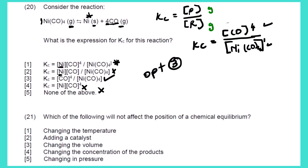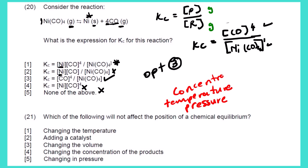Question 21: which of the following will NOT affect the position of a chemical equilibrium? You should know that the factors that affect chemical equilibrium are three: temperature, pressure, and concentration. Note that pressure can be varied using volume — when we increase volume we decrease pressure, and when we decrease volume we increase pressure. So volume and pressure are essentially the same factor. These three are the only factors that affect equilibrium.